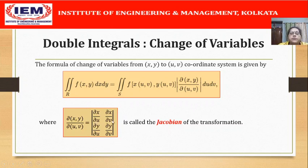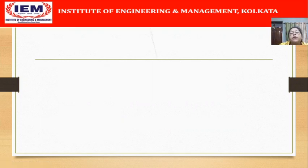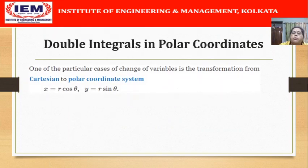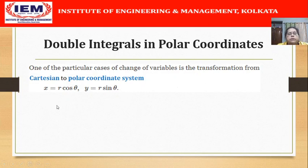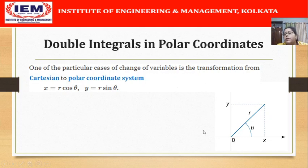The Jacobian is given by a 2×2 determinant whose first row elements are ∂x/∂u and ∂x/∂v, and the second row elements are ∂y/∂u and ∂y/∂v. Today's lecture will examine a particular case of this change of variables: a transformation from Cartesian to polar coordinates, where x = R cosθ and y = R sinθ.